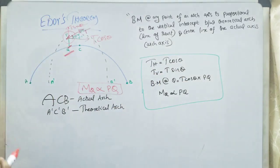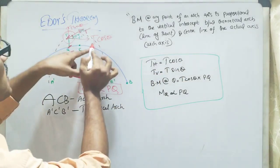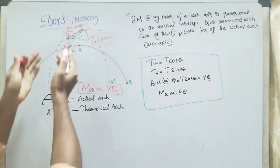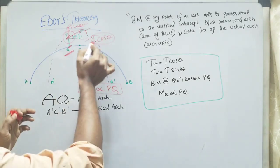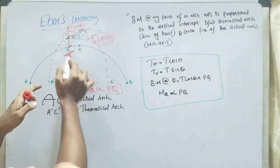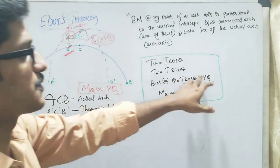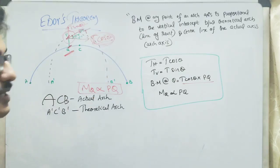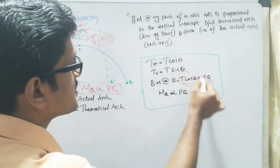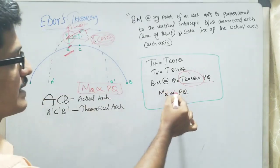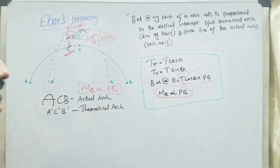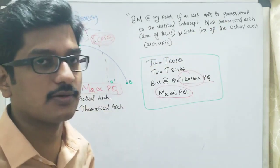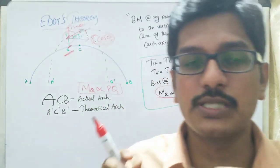Taking the bending moment at Q, only the influence of T cos theta acts, because T sin theta passes through the same point Q, so its influence is zero. Therefore, the bending moment at Q equals T cos theta multiplied by PQ. If no loads are acting over the arch, the horizontal component remains constant throughout the arch. So the bending moment at Q is directly proportional to the vertical intercept PQ between the theoretical arch and the actual arch. This proves Eddy's theorem.